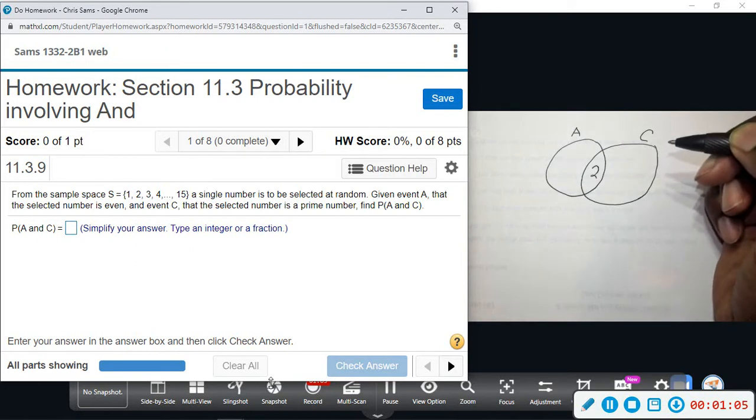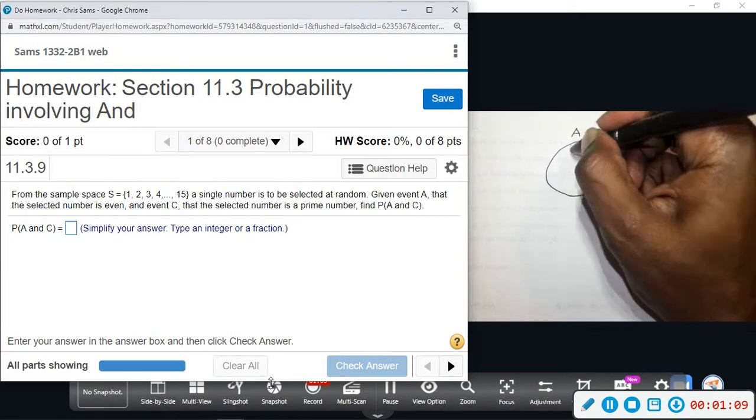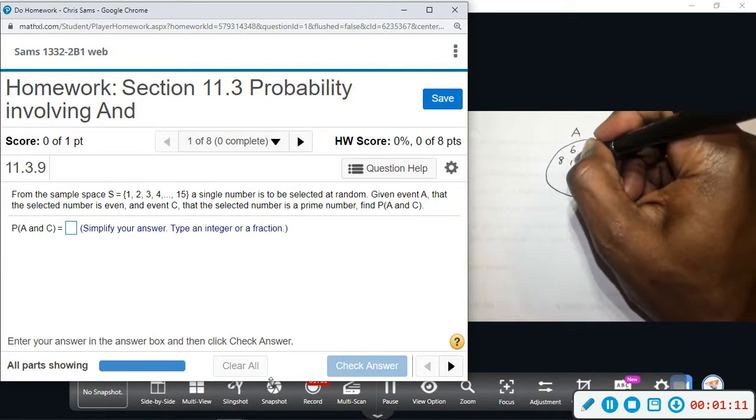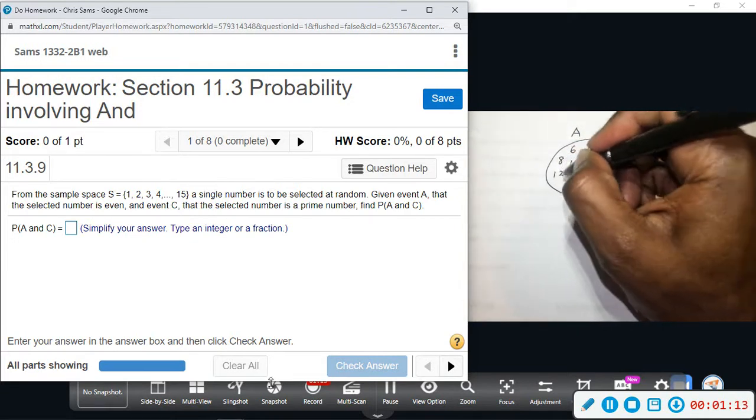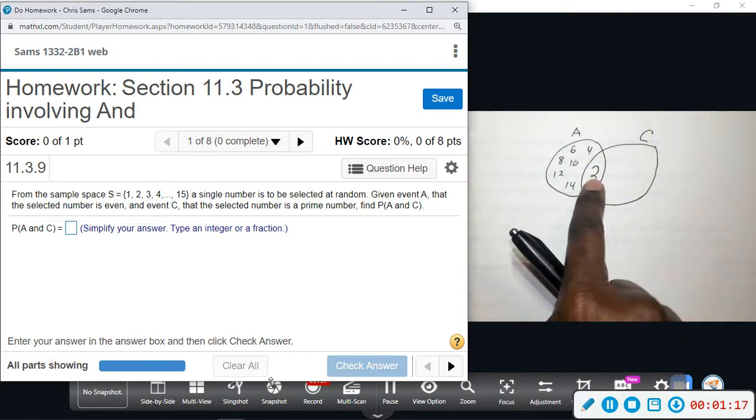And then everything else will be 4, 6, 8, 10, 12, and 14. So in circle A are all the even numbers. Two is prime. Two times one is two. The only numbers that you can multiply to get two are one and itself. Two is the only even prime number.